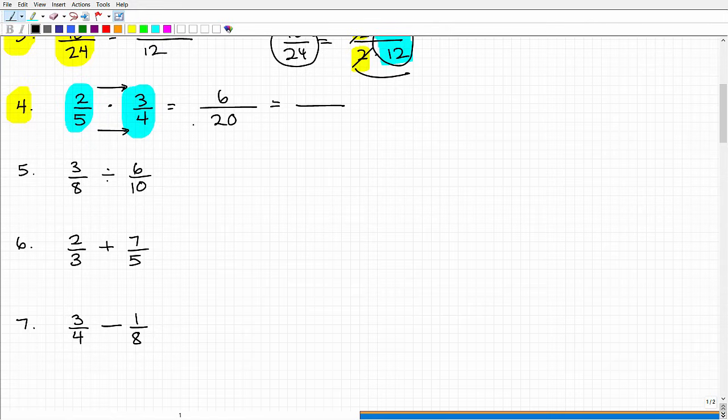You can think of 6 as 2 times 3, and 20, I can think of it as 2 times 10. I'm looking to create common factors so I could cross-cancel, and I'm left with the fraction 3 tenths. So 3 tenths is the simplified version of 6 twentieth. Mathematically they're equivalent, but you always want to leave your final answers fully reduced or simplified.